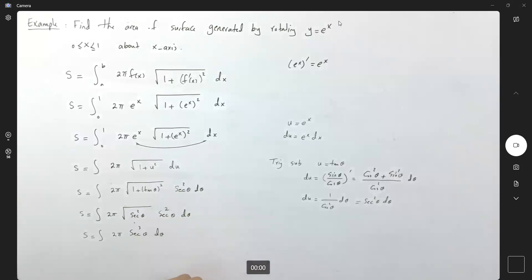Well, from previous examples that we did in the class, this integral equals 2π times one-half sec θ tan θ plus ln of absolute value of sec θ plus tan θ. And here your θ ranges from π/4 to the value of arctan(e).